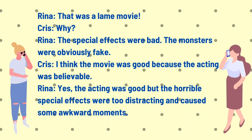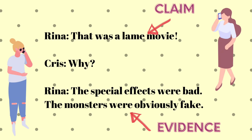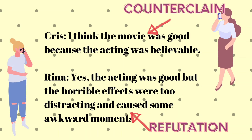Now let's look back on the conversation of Chris and Reena. Label each statement as evidence, counterclaim, refutation, or claim. Here are the answers. The first one — 'That was a lame movie' — is our claim. The evidence: 'The special effects were bad' and 'The monsters were obviously fake.' 'I think the movie was good because the acting was believable' is our counterclaim. And 'Yes, the acting was good but the horrible effects were too distracting and caused some awkward moments' is our refutation. Did you get them right?